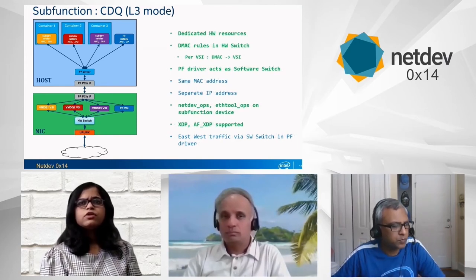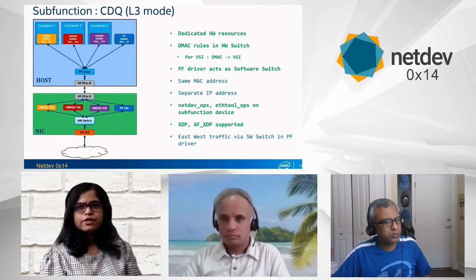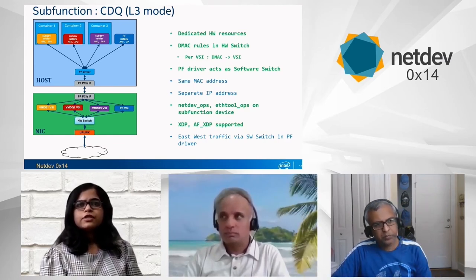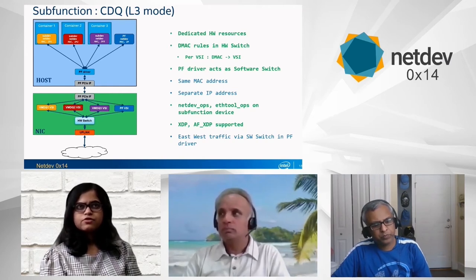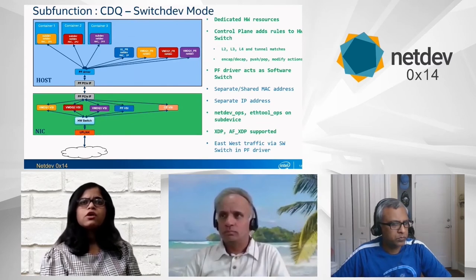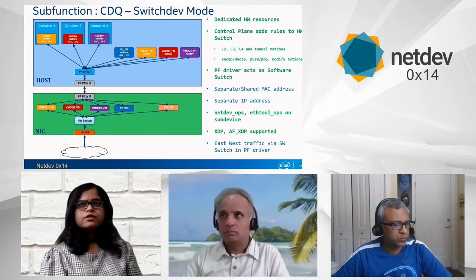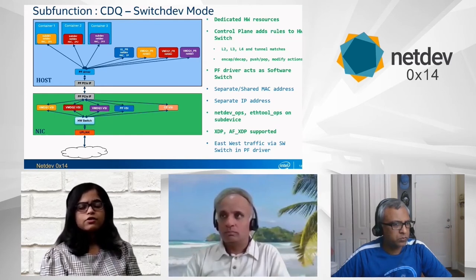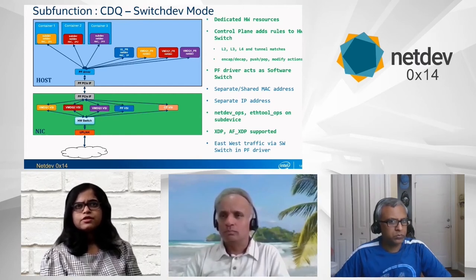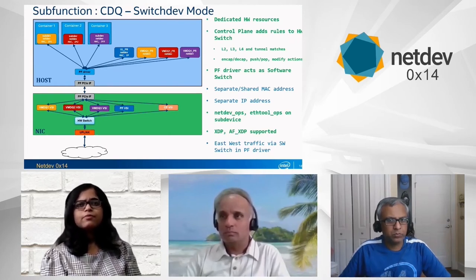Sub-functions can operate in L2 and L3 modes. In L2 mode, each sub-function netdev can have a separate MAC address and IP address. An important point is that sub-function netdevs are standard net devices, exposing all netdev ops and ethtool ops callbacks — valid for any standard net device. Unlike accelerated MACVLAN and IPVLAN where AF_XDP zero-copy mode is not supported, sub-function netdevs have their own queue sets. When assigned to the container namespace, queues can be exposed to containers, enabling AF_XDP zero-copy mode support.